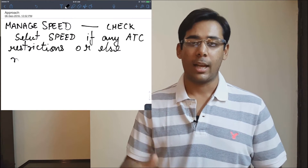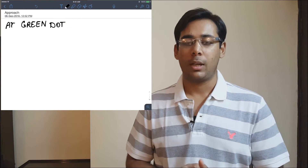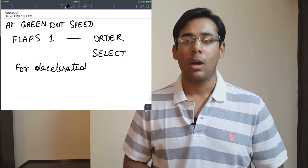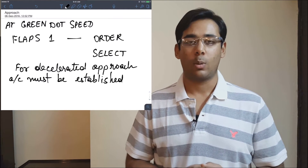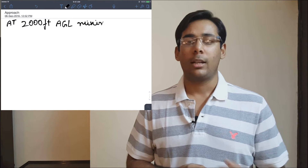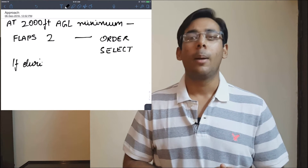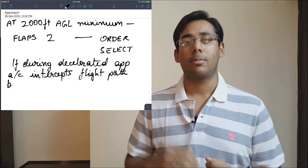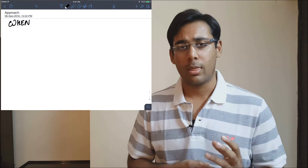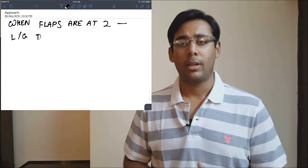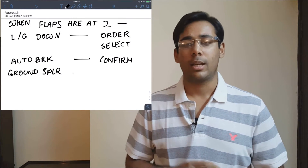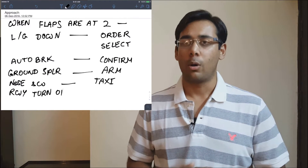Once you activate the approach phase, manage speed — select speed if there's an ATC restriction, otherwise manage speed so the aircraft decelerates accordingly. When at green dot speed, the pilot flying requests flaps 1 and the pilot monitoring checks speed and selects flap 1. For a decelerated approach, the aircraft must be established with flaps 1 and S speed at or above 2,000 feet while intercepting the glide slope. At 2,000 feet, flaps 2 is ordered. If the glide path is intercepted below 2,000 feet, select flaps 2 when one dot below the glide slope. With flaps 2, order gear down, confirm auto brake per briefing, arm spoilers, and select nose light and runway turnoff light to on.